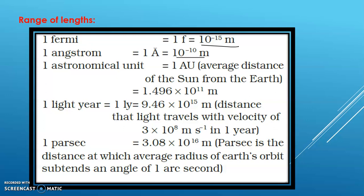1 Astronomical Unit is the average distance of the Sun from the Earth. 1 Astronomical Unit is equal to 1.496 into 10 to the power of 11 meters. To convert 1 meter to astronomical units, we divide by 1.496 into 10 to the power of 11.